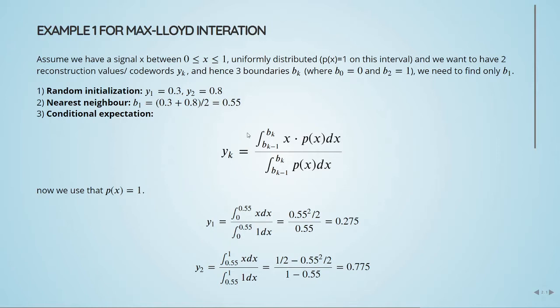This is a very simple example so we can just get the feeling of how this algorithm works. Step one, we start with a random initialization of y1 and y2. So we choose some values for y1 and y2. Then we apply the nearest neighbor rule. We calculate b1 given y1 and y2, which were randomly initialized.